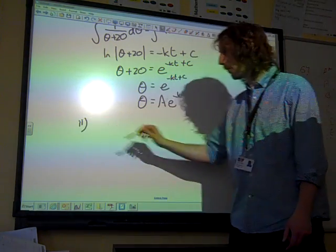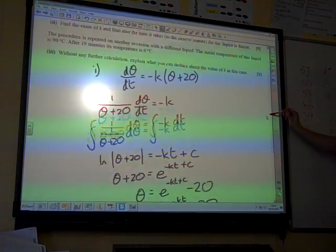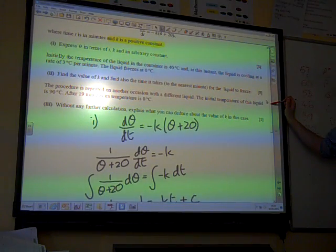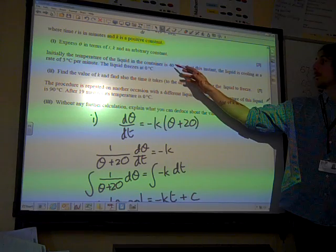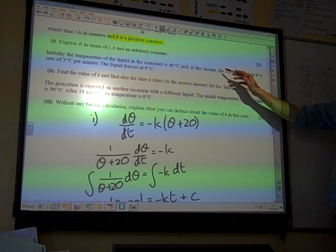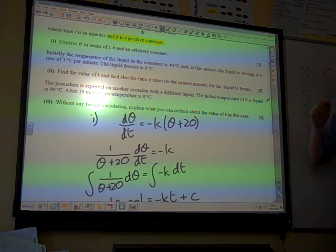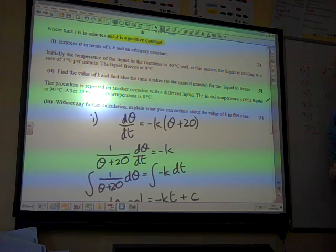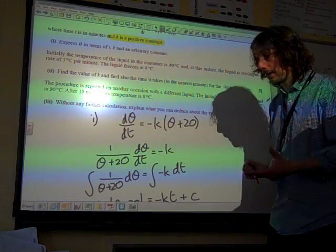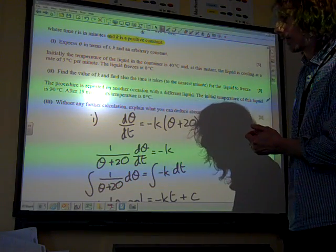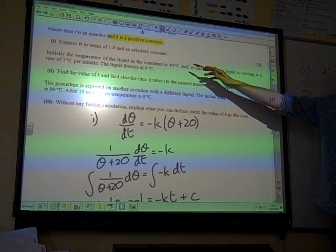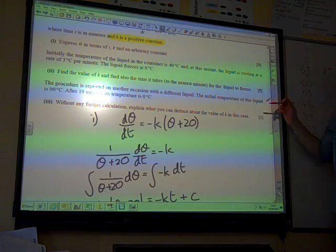Part two. Now we start getting some useful information to decode that. We're told that when t is zero, the temperature is 40. And at this instant, the liquid is cooling at a rate of 3 degrees per minute. The liquid freezes at zero. So we've got a lot to deal with in there.